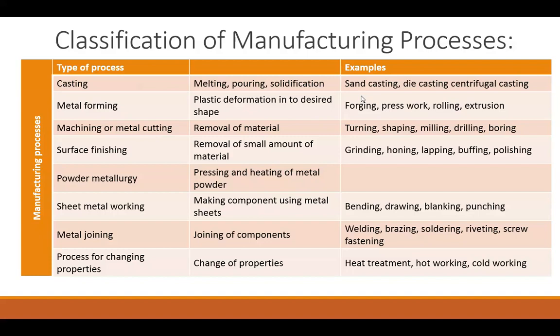The next process is for changing the properties of the material. This is the technique used for improving the mechanical properties of the finished product or component. Heat treatment, hot working, and cold working are the processes used for improving the properties of the finished product. This concludes the classification of manufacturing processes. Thank you.